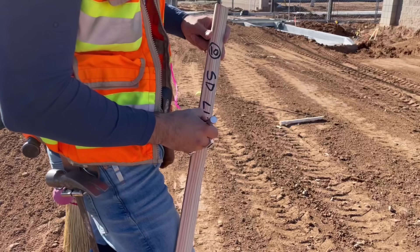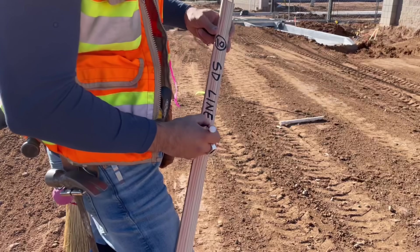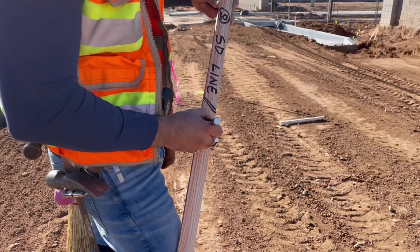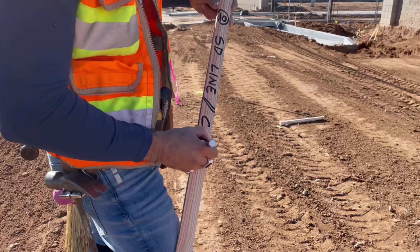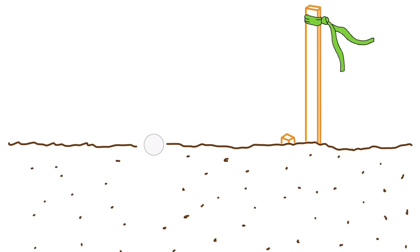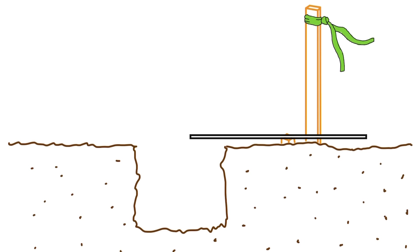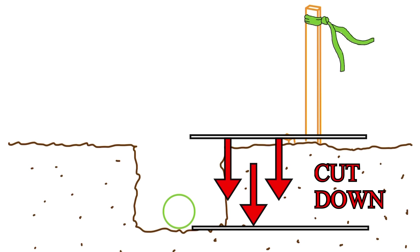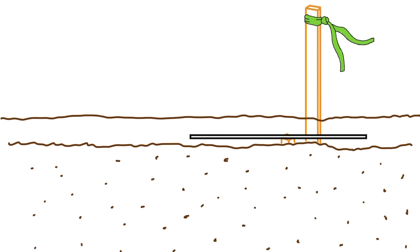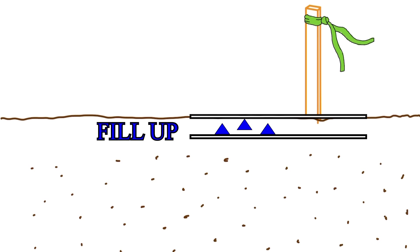Next I'll write a description of what the stake is referencing. We can see that this stake is 10 feet from a point along a storm drain line. Next, we're given our cut or fill information. This means that from our point we'll either cut down or fill with additional dirt to arrive at the design elevation for what we are constructing.